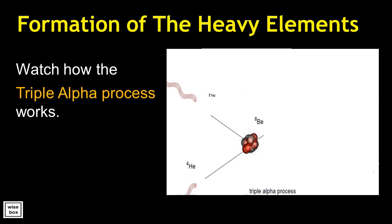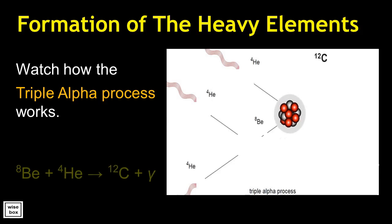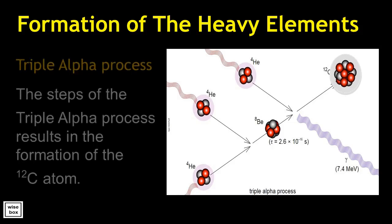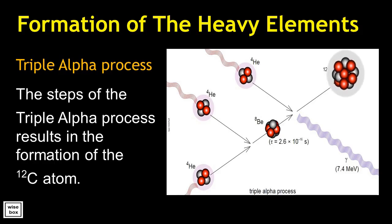Two alpha particles fuse together and form a beryllium atom. Then the beryllium atom fuses with another alpha particle to form the carbon atom. The steps of the triple alpha process result in formation of carbon-12 atom.